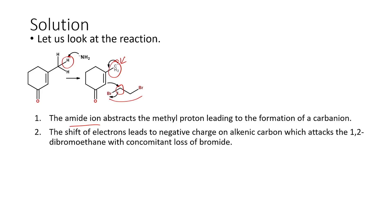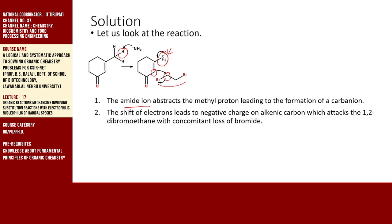The thermodynamic stability of the formed intermediate decides which path is more favored. The alkynic carbon attacking the 1,2-dibromoethane is the most favorable pathway. This leads to condensation or addition of that unit to the alpha carbon of the carbonyl compound, and we end up with the exocyclic double bond.